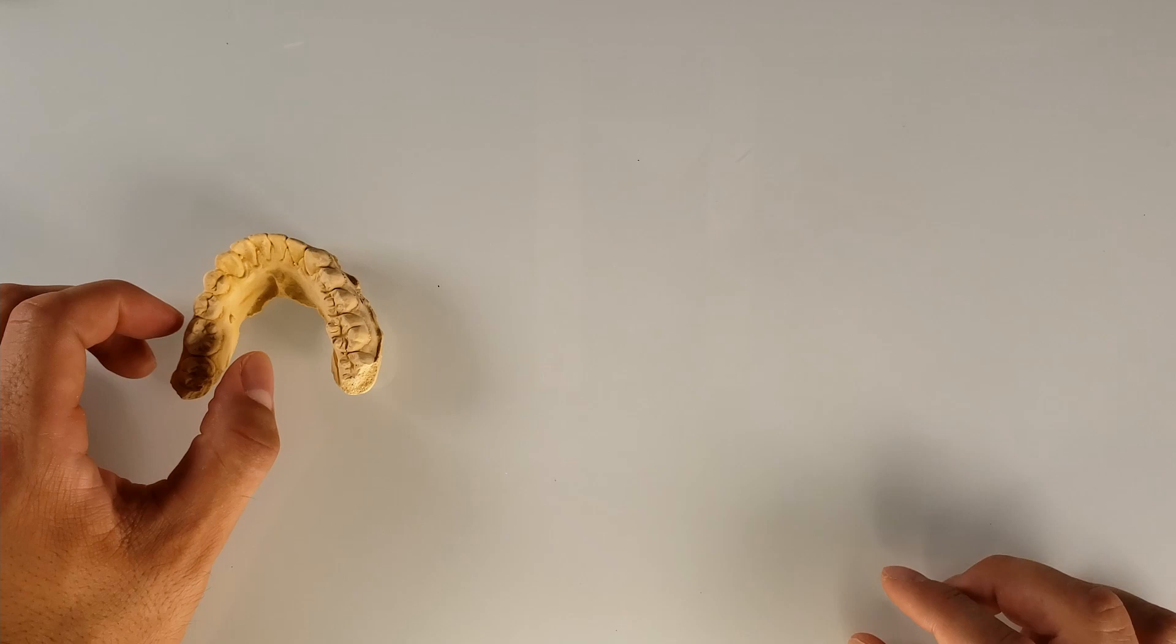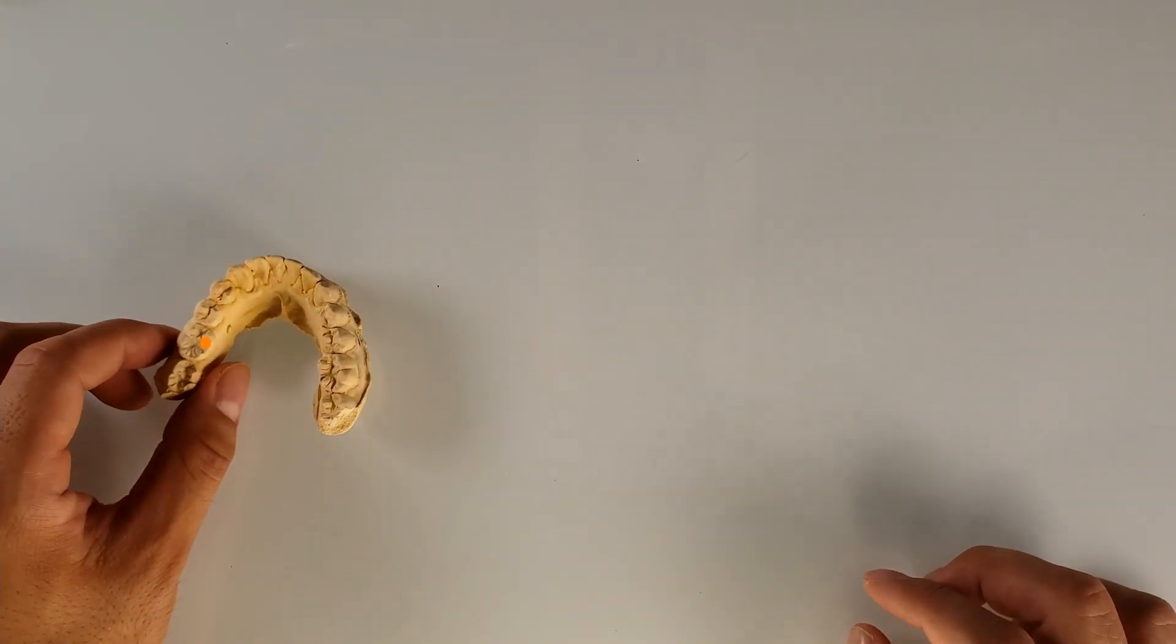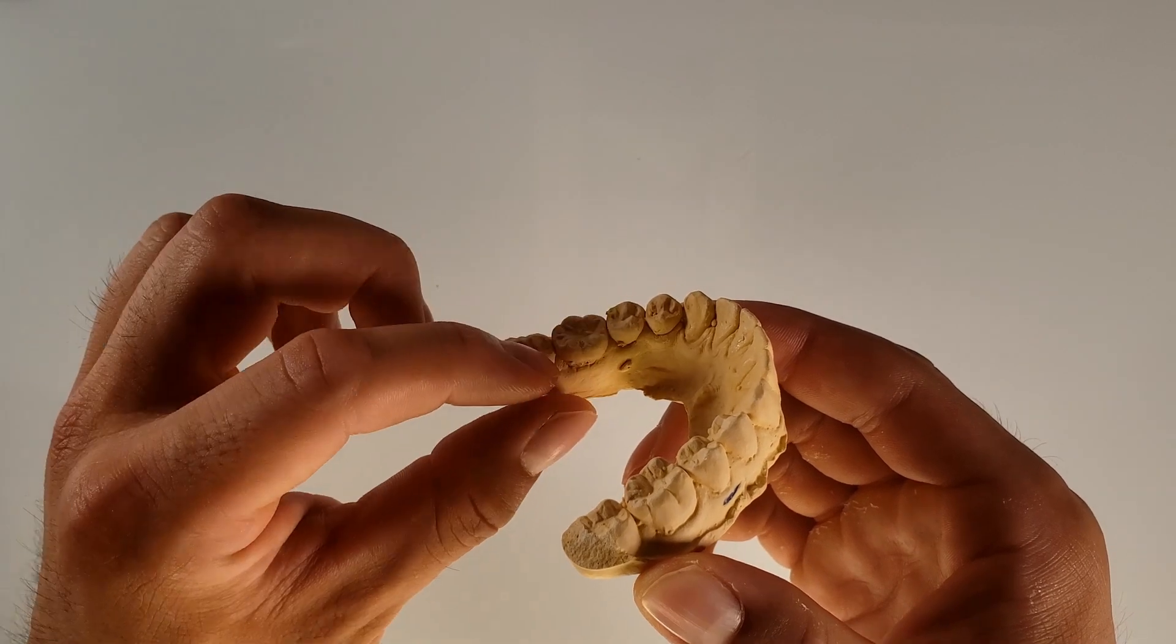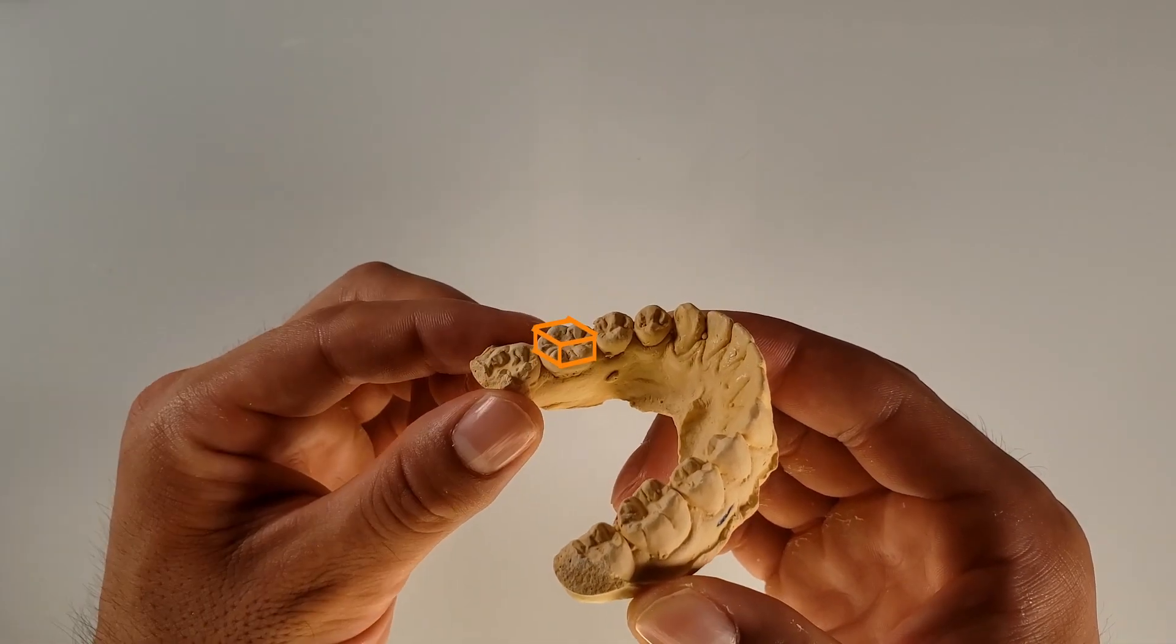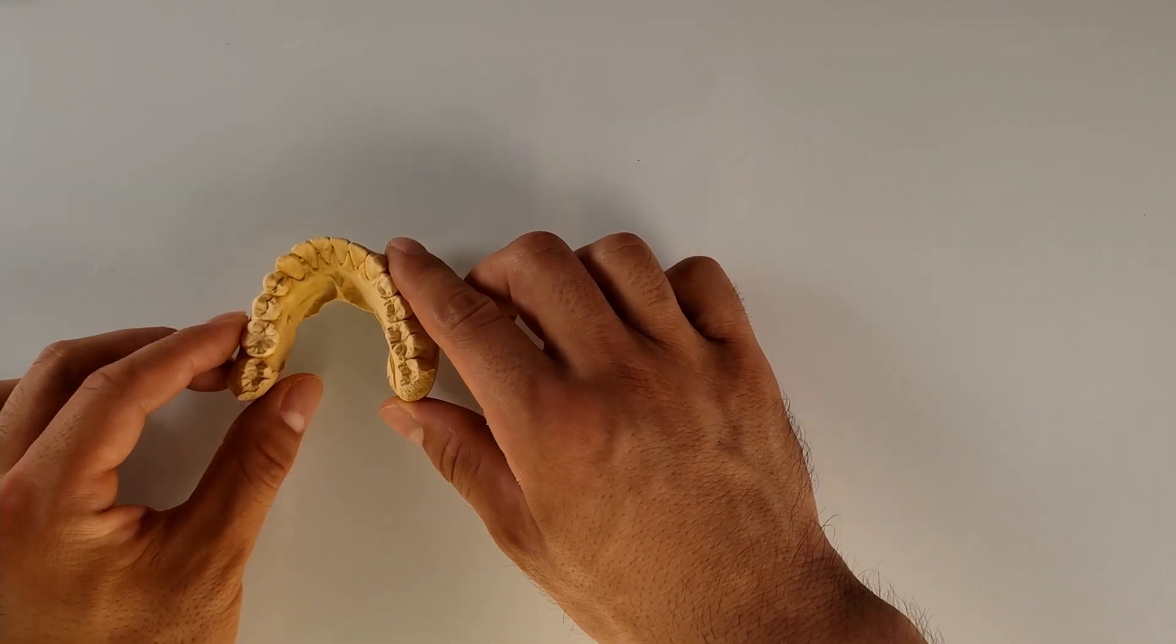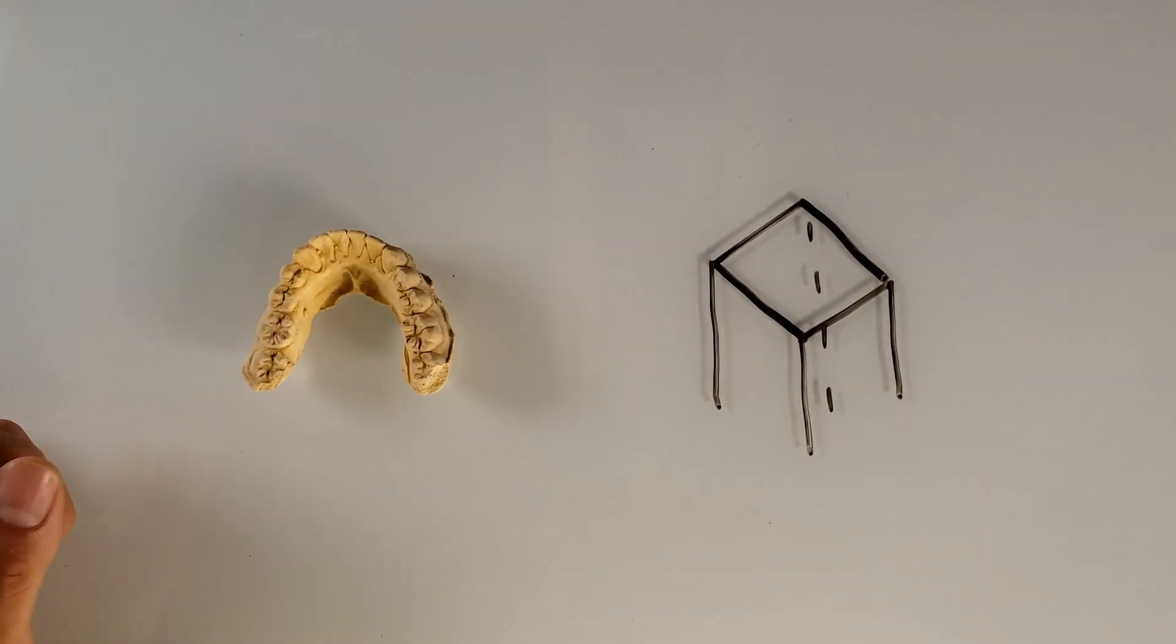So this is the mandibular first molar. If we get a closer look at this, what you can see is it kind of looks like a cube. We're looking at this perspective of a cube. I'm going to draw that for you. All right, so here's the cube.